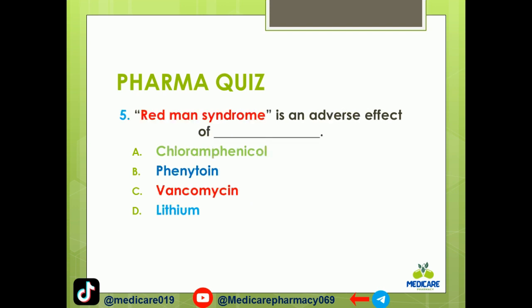Number five: Redman syndrome is an adverse effect of which drug? A. Chloramphenicol. B. Phenytoin. C. Vancomycin. D. Lithium. The answer is C. Vancomycin.